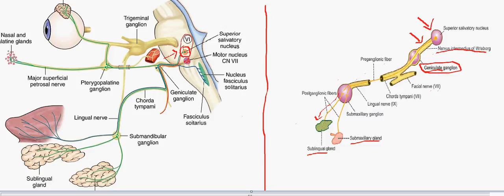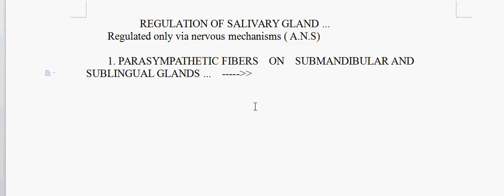From the submaxillary ganglion, the post-ganglionic fibers supply the submaxillary and sublingual glands. The general pathway starts from the pons, travels through the facial nerve, leads to the lingual nerve, then to the submandibular ganglion, which provides post-ganglionic fibers to the sublingual and submandibular glands. The main function of these parasympathetic fibers is to increase secretion of saliva with a large quantity of water and decreased ionic content.